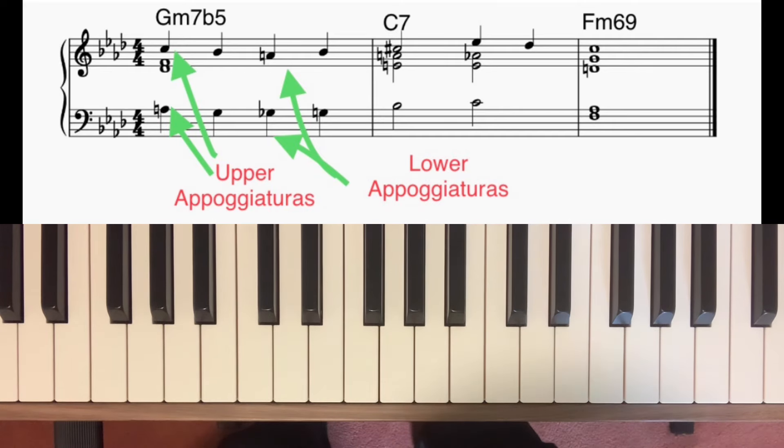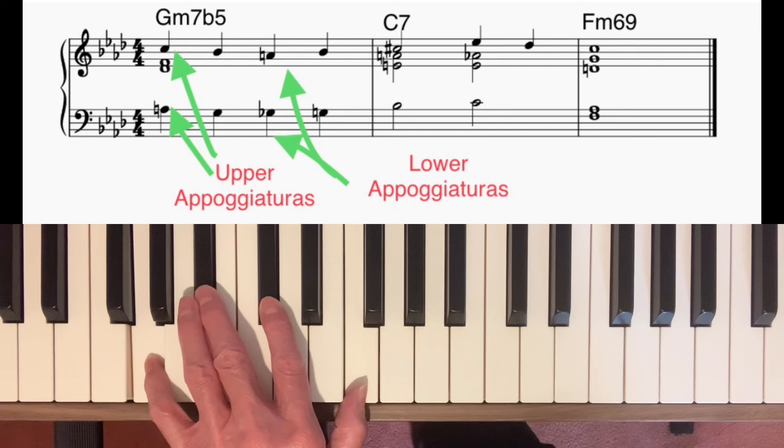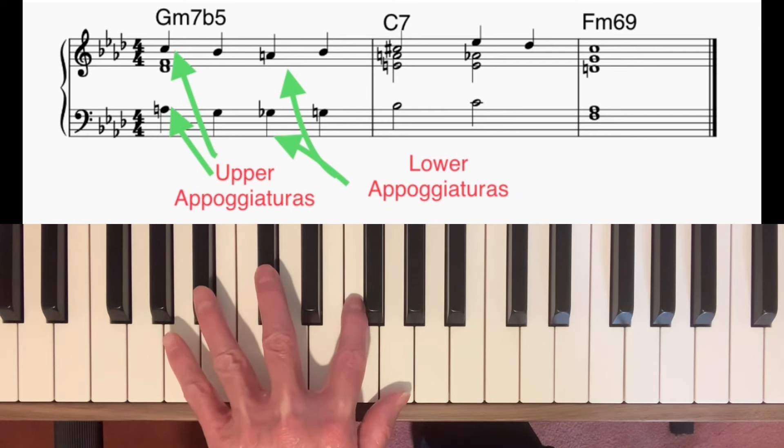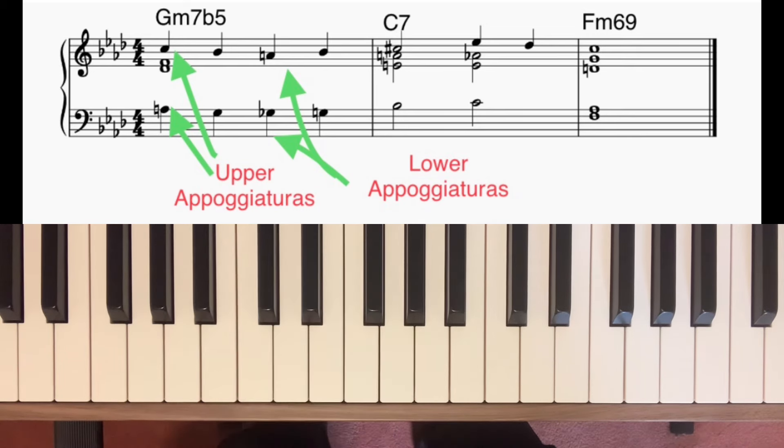That was a 2-5-1 chord progression in the key of F minor. Chord 2 in F minor is G minor 7 flat 5. Barry Harris would have said that that is the same chord as B flat minor 6. It contains the same notes. And therefore you can use the B flat minor 6 diminished 7th scale to create movement over it.